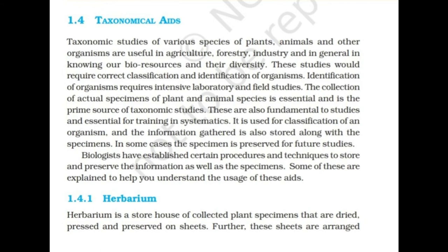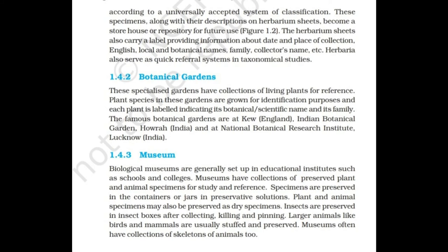A herbarium is a storehouse of collected plant specimens that are dried, pressed, and preserved on sheets. The sheets are arranged according to the universally accepted system of classification. These specimens along with descriptions on the herbarium sheets become a repository for future use. Herbarium sheets also carry labels providing information about the date and place of collection, English, local, and botanical names, family, and collector's name. Herbaria also serve as quick referral systems in taxonomical studies.